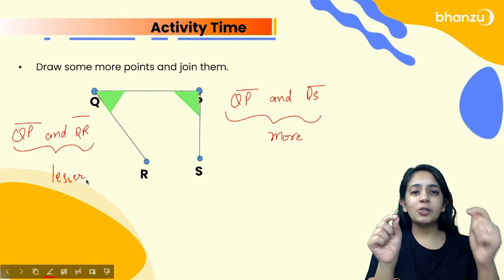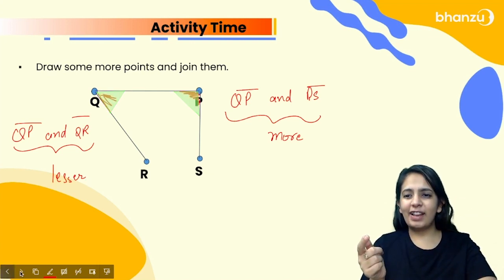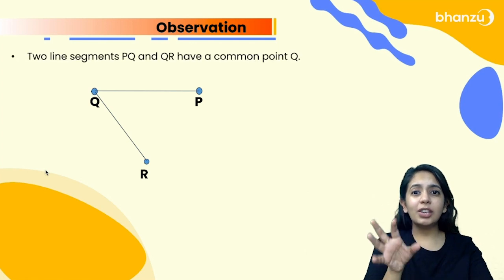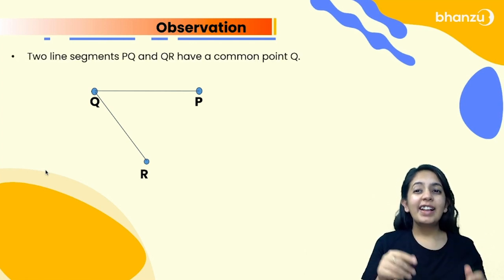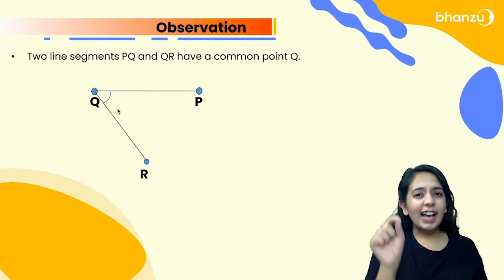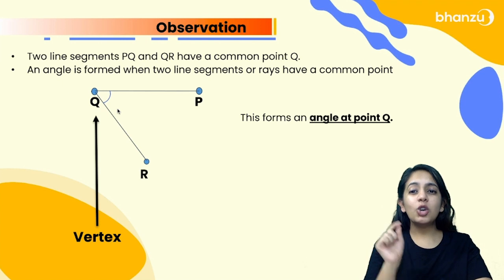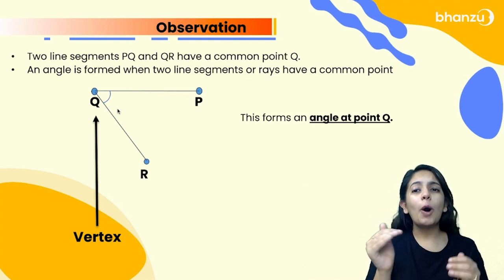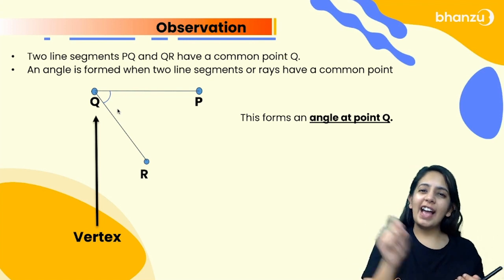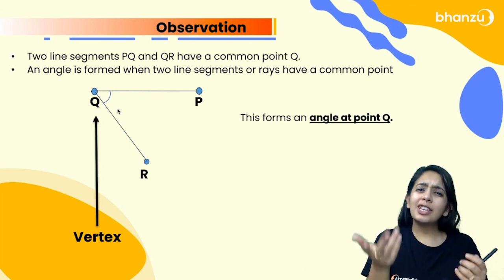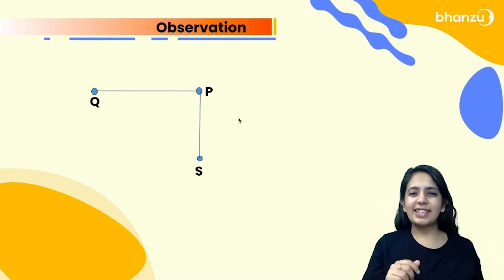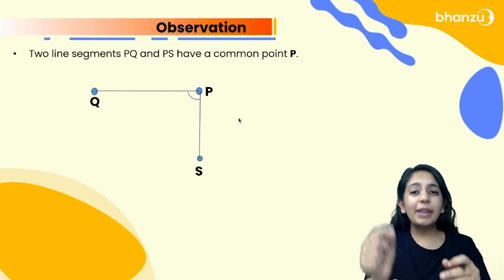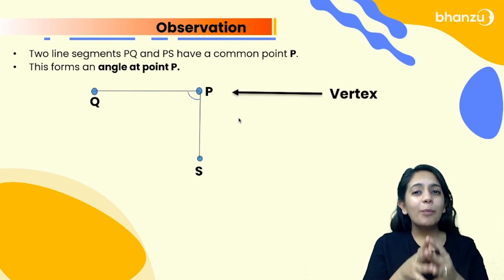Now let's talk in detail about each pair of line segments. Take the first pair: line segment PQ and QR. The common point is Q, and this common point has a special name — because the angle is formed here, it is called the vertex. An angle is formed when two line segments, two rays, or two lines have a common point. Here the common point is Q, so the angle is formed at vertex Q. For the other pair, the common point is P, so the angle is formed at vertex P.